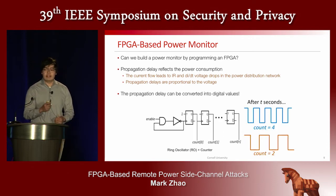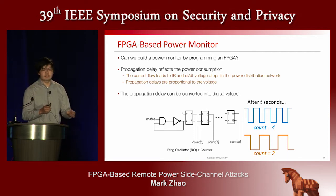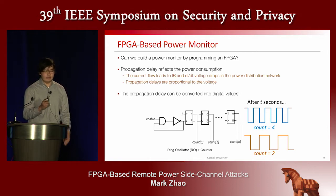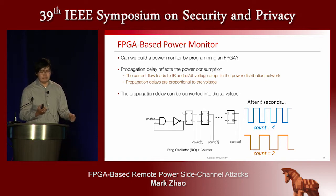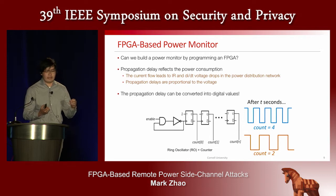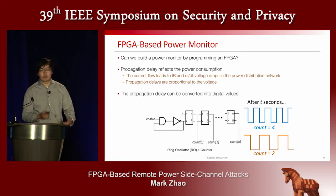If we connect a ring oscillator output to the clock of an up-counter and let the counter run for T seconds, then reading the counter output gives us a digitized value of propagation delay. For example, if the voltage supply is high, we might have a count of four as shown on the top. If the voltage supply is low — meaning more power consumption — we get a lower counter value.